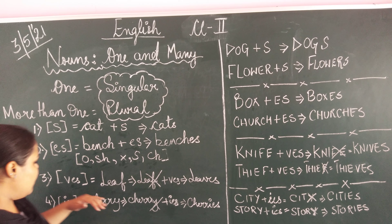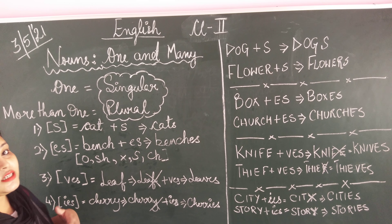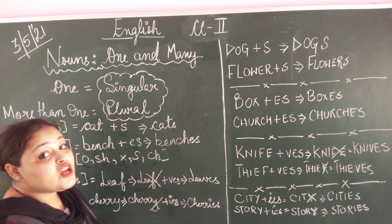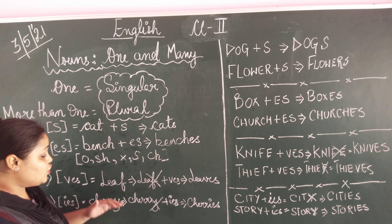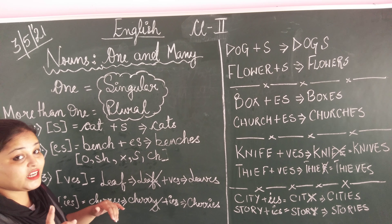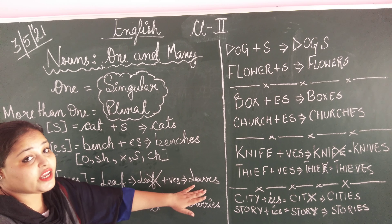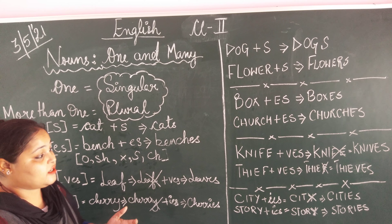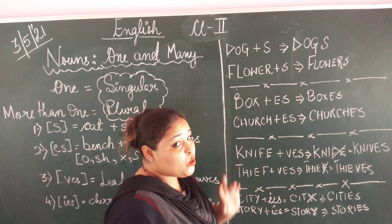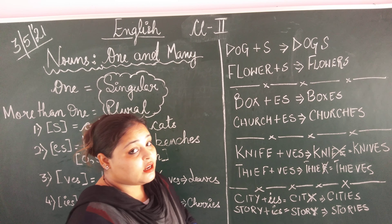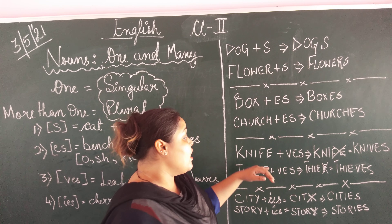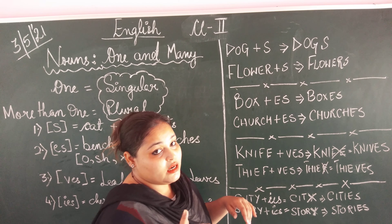Now we are going to see the third rule: adding VES. The words which end with F — you cancel out F and add VES to get the plural noun. For example, 'leaf' means one leaf. Cancel out F and add VES: it becomes 'leaves,' meaning many leaves. Similarly, 'knife' — K-N-I, cancel out FE, add VES, giving K-N-I-V-E-S: knives. Knife is singular, knives is plural.